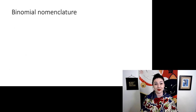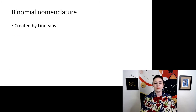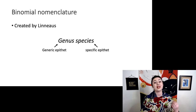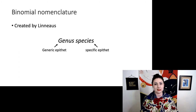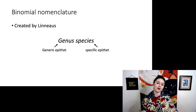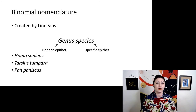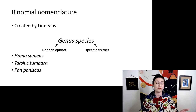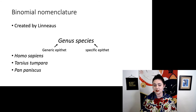Let's remind ourselves what binomial nomenclature is, created by our friend Linnaeus. It uses this format: we have our generic epithet and our specific epithet. We italicize both of them and we capitalize the genus, but not the species name. When you are writing the species name, you do have to write all of this. Here are three examples. You may occasionally see things abbreviated — in a scientific publication you need to write the full name the first time, but then it might be abbreviated. So you might see H. sapiens, but you can only do that after you've written out the full name.